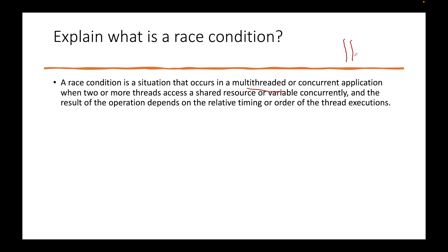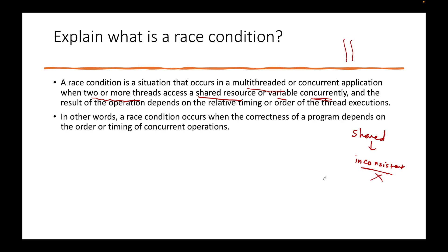What actually happens is there are two or more threads trying to access a shared resource or variable concurrently — meaning at the same time. When we modify something which is a shared value concurrently, we get inconsistent or wrong results. That is why race condition is a problem. Race condition, or data race, leads to incorrect, inaccurate, and inconsistent results, which we do not want.